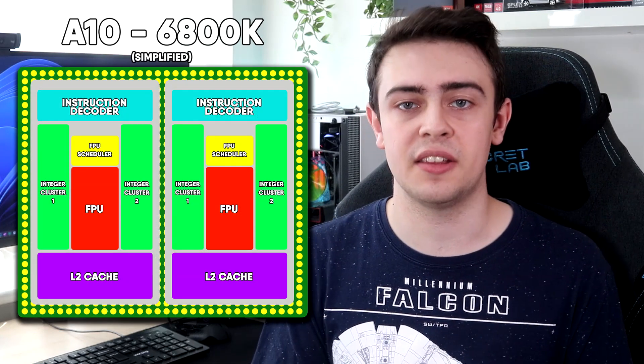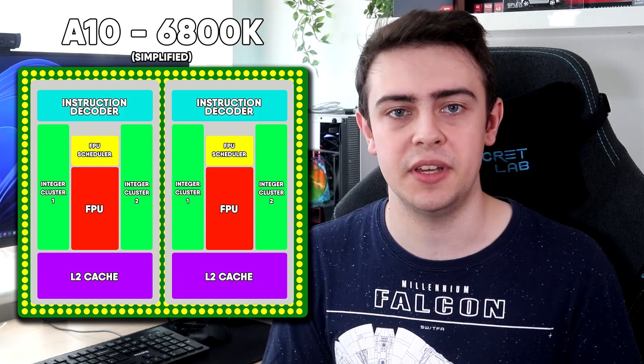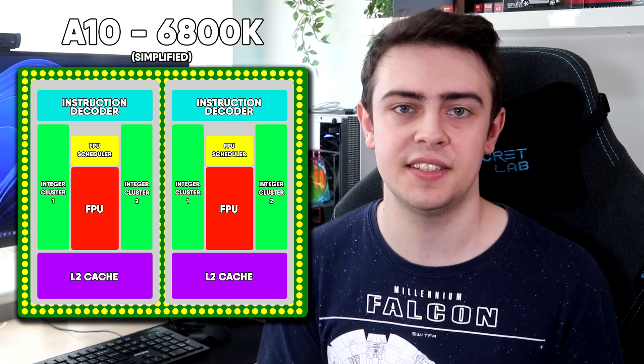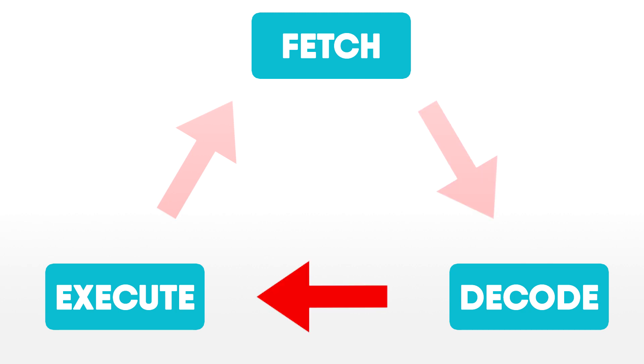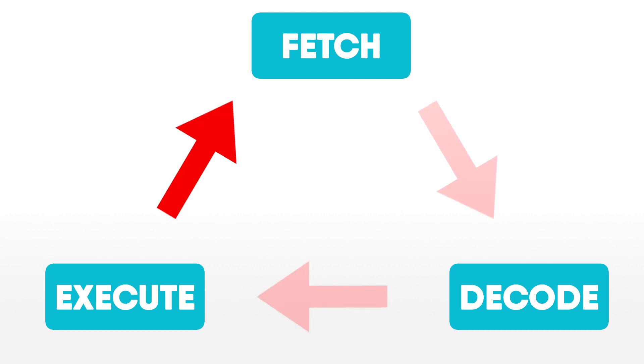To answer that, we need to look at exactly how a multi-core CPU works. The die of the CPU itself is split into multiple sections which each perform different tasks. Let's take a look at the block diagram for Piledriver CPUs like the A10-6800K. All CPUs work by first fetching an instruction, decoding it, and finally executing it — a very simplified view, but that's the overall process.